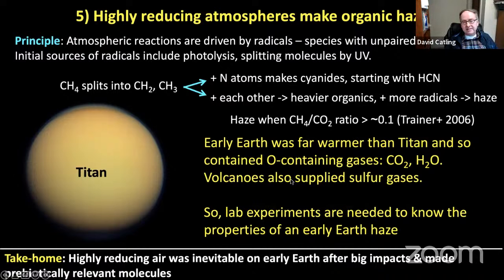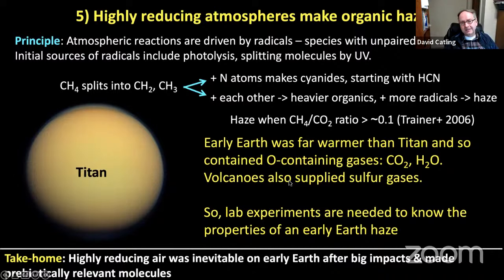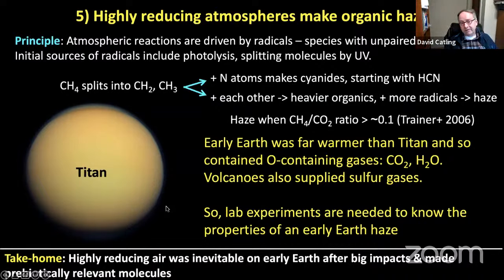There is a difference, however: the early Earth was far warmer than Titan, whose surface temperature is about 94 Kelvin. The early Earth would have contained oxygen-bearing gases such as CO2 and H2O — which are frozen on Titan's surface — and volcanoes would have supplied sulfur gases. Lab experiments are needed to know the properties of an early Earth haze in this more complicated situation. The take-home is that highly reducing air was inevitable on early Earth after big impacts and would have made prebiotically relevant molecules — a segue into Nick Wogan's talk.